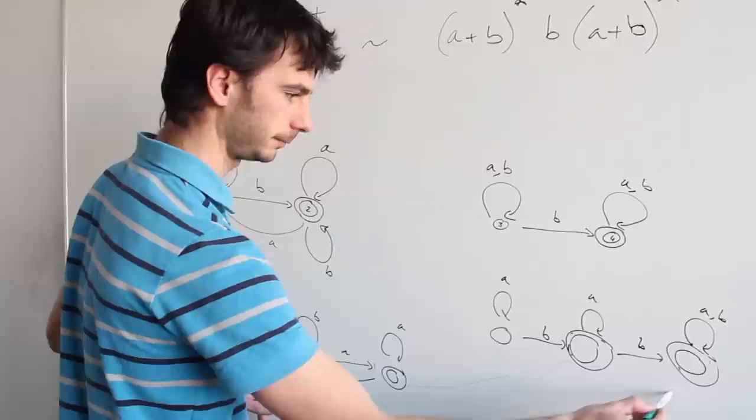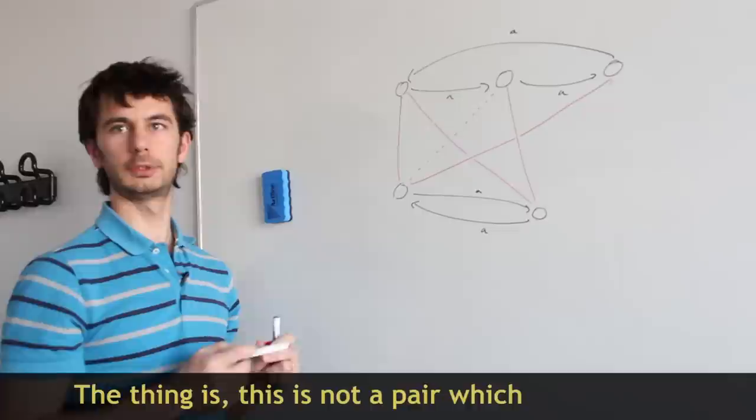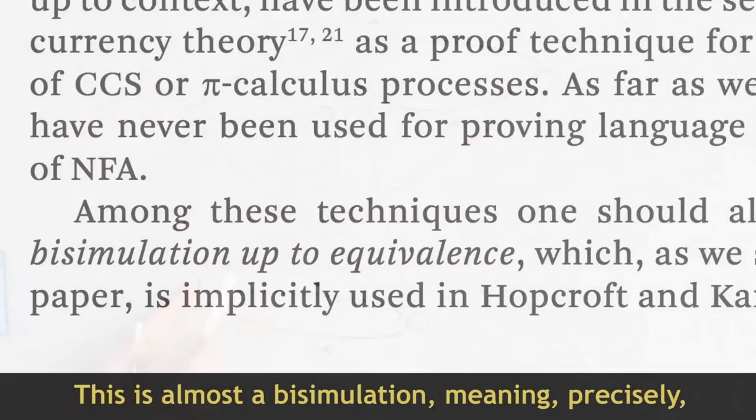This is where optimization comes in. A technique developed by John Hopcroft and Richard Karp in 1971 showed that you can save time by drawing the bisimulation only up to a certain point. The thing is, this is not a pair which I have all encountered so far, but this is a pair which I can relate using those three pairs here. This is almost a bisimulation, meaning precisely this is a bisimulation up to equivalence.